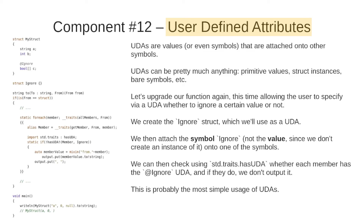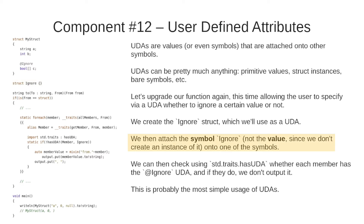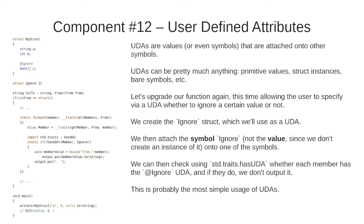Next up: User Defined Attributes, otherwise known as UDAs. UDAs are values or even symbols that are attached onto other symbols, and can be pretty much anything from primitive values, struct instances, bare symbols, etc. Let's upgrade our function to allow the user to specify via a UDA whether to ignore a certain field or not. We create an Ignore struct to use as a UDA and attach the symbol of Ignore — not an instance — onto one of the members. We can then check using std.traits hasUDA whether each member has the @Ignore UDA, and if so we don't output it — creating a blacklist UDA.